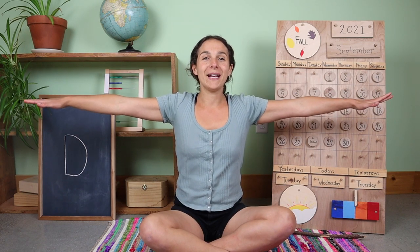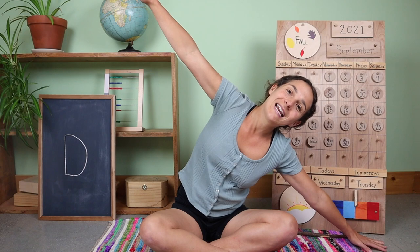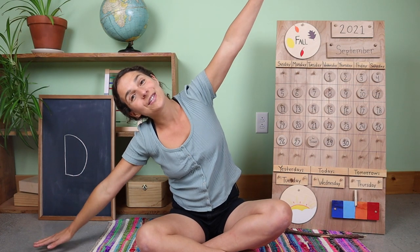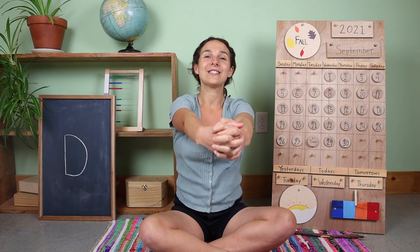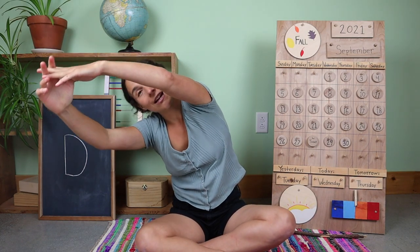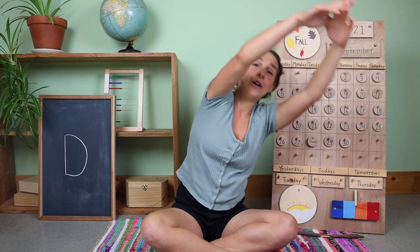We're going to stretch our arms out like airplane wings. Fly to this side, over to the other side, fly back to the middle. Now stretch your airplane wings into a big circle out in front. Bring that circle up over your head. We'll stretch on this side, over to the other side.